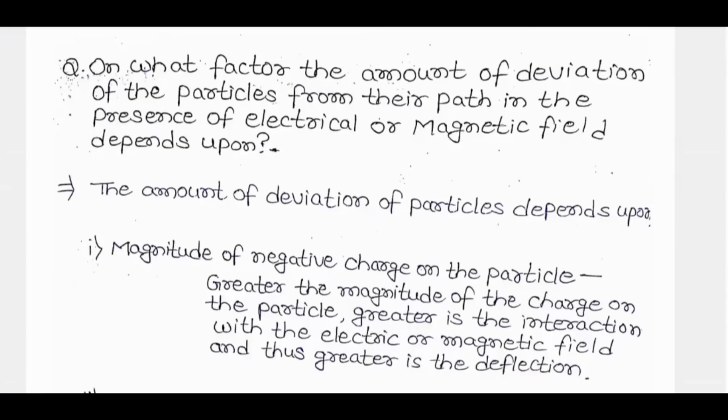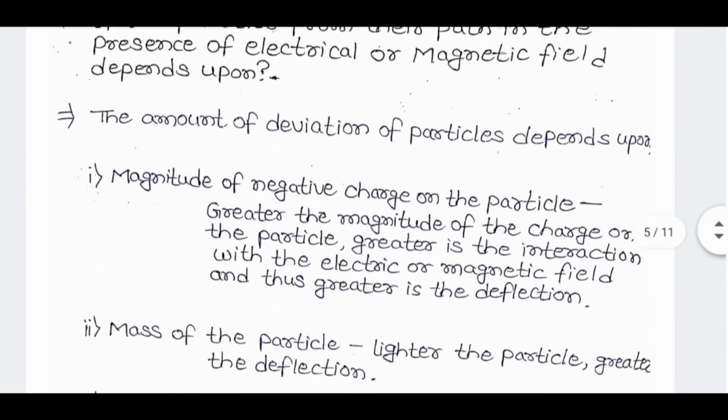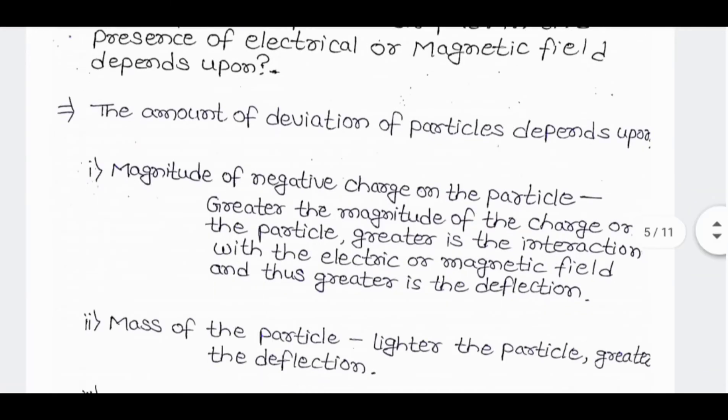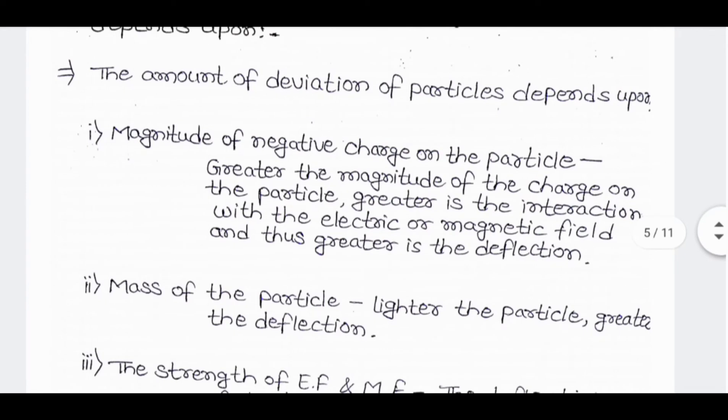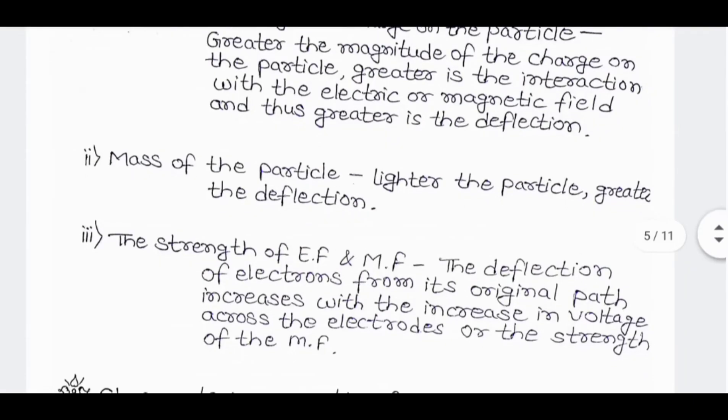On what factors does the amount of deviation of the particle from their path in the presence of electrical or magnetic field depend upon? The amount of deviation of particle depends upon the magnitude of negative charge on the particle - greater the magnitude of charge on the particle, greater is the interaction with the electric or magnetic field and thus the greater is the deflection. Mass of the particle - lighter the particle, greater the deflection.